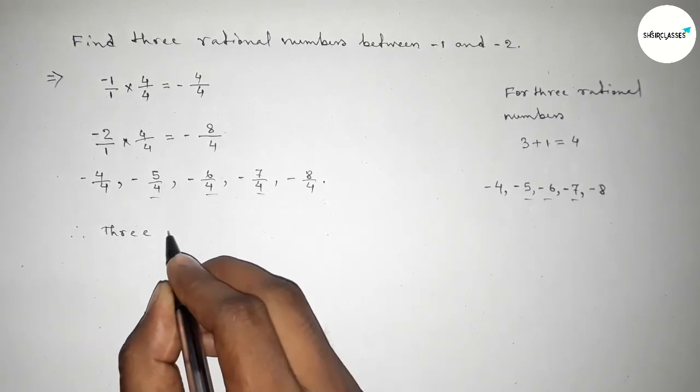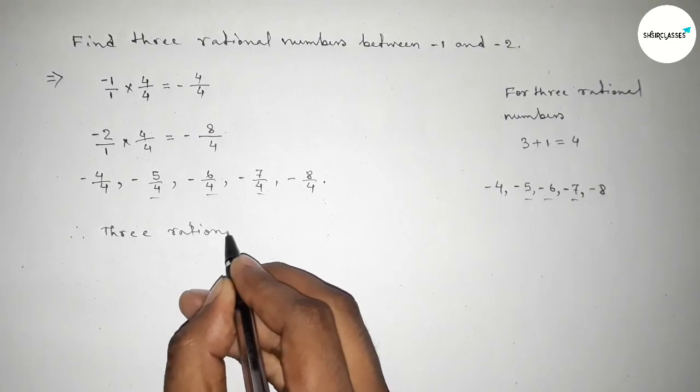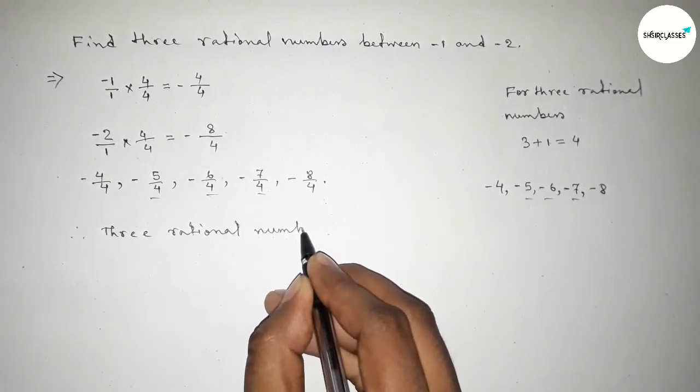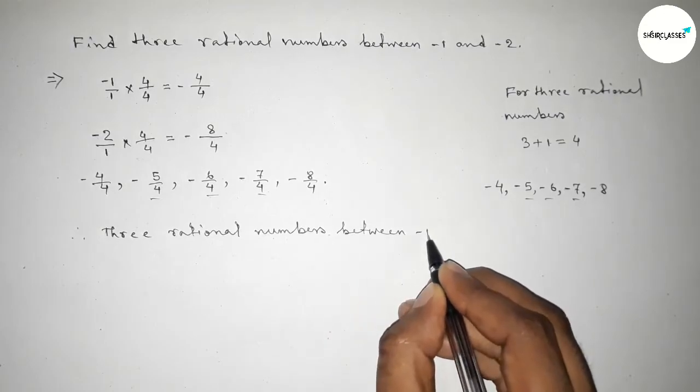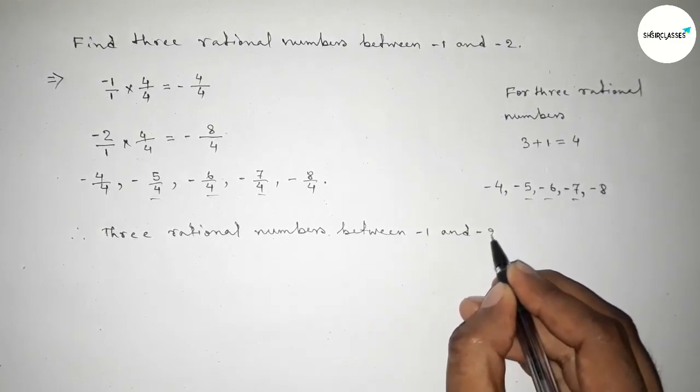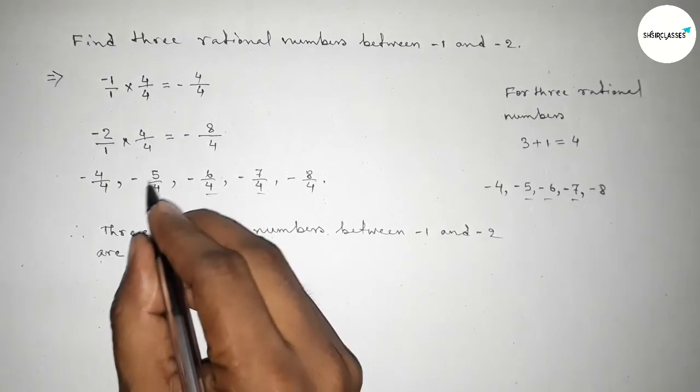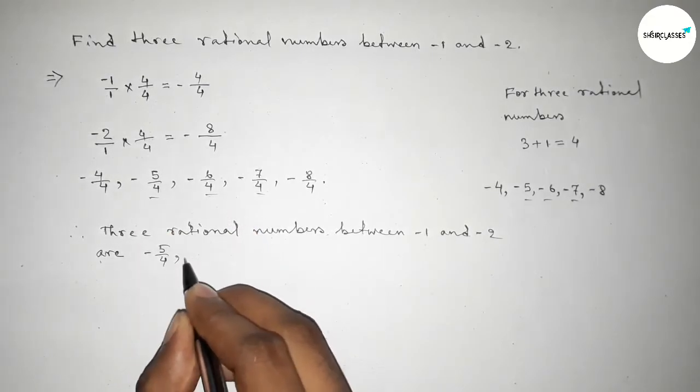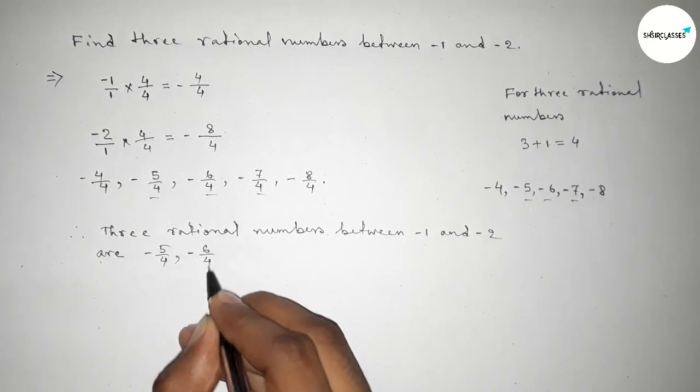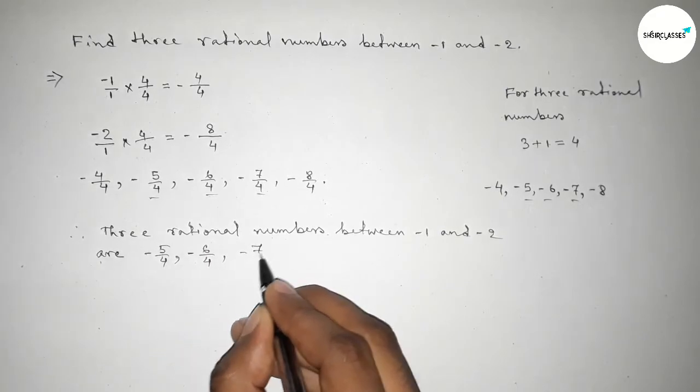You can get different three rational numbers by using different methods. Therefore, the three rational numbers between minus 1 and minus 2 are: minus 5 over 4, minus 6 over 4, and minus 7 over 4.